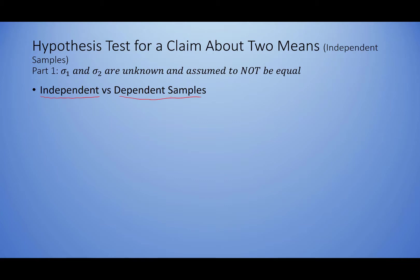A dependent sample means that they have some underlying connection. Oftentimes, people will look at the heights of men compared to women — that would be independent sampling. But if we change that to the heights of husbands compared to their wives, that would be considered dependent sampling because there is a natural connection between husbands and wives.